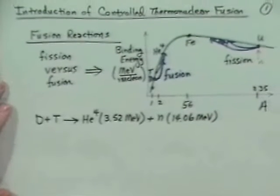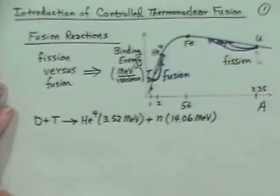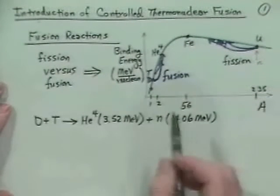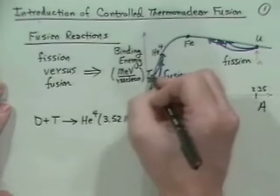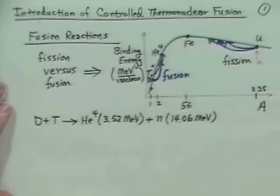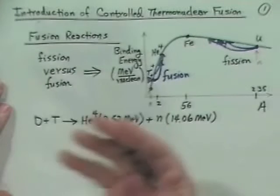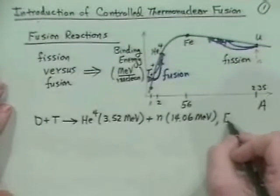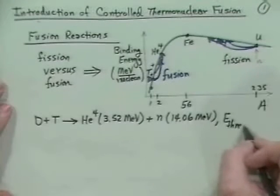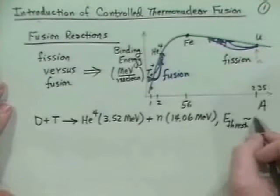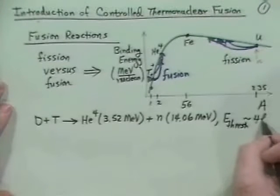If you want this reaction to happen, you have a deuteron and a triton — both positively charged ions — so you have to overcome the Coulomb potential barrier. There is a threshold for this reaction of about 4 to 4.5 kilo electron volts.